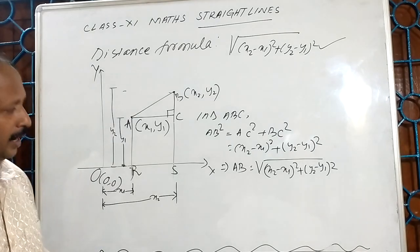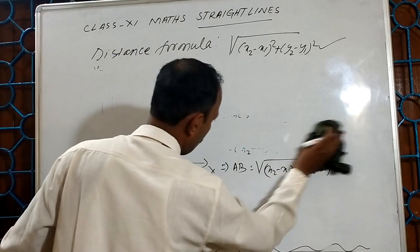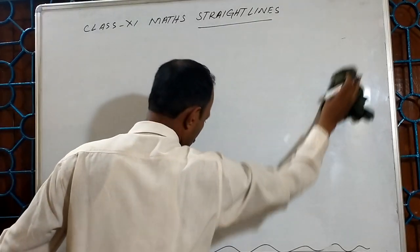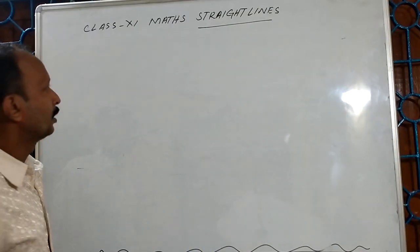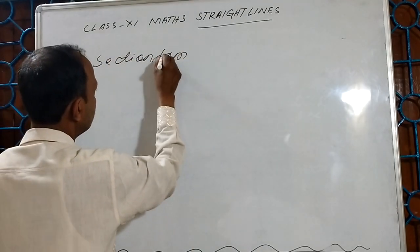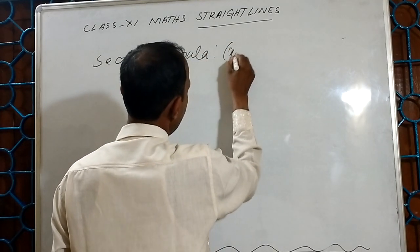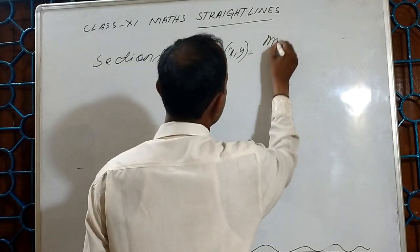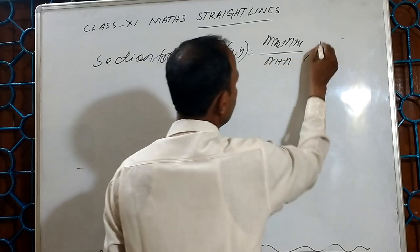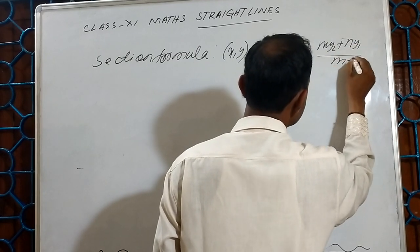What you have learned in high school level — it is time to recap once again. The next formula is the section formula. The section formula is: x equals (mx2 plus nx1) upon (m plus n), and y equals (my2 plus ny1) upon (m plus n).